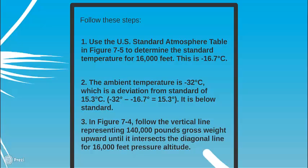Third step: in Figure 7-4, follow the vertical line representing 140,000 pounds gross weight upward until it intersects the diagonal line for 16,000 feet pressure altitude.